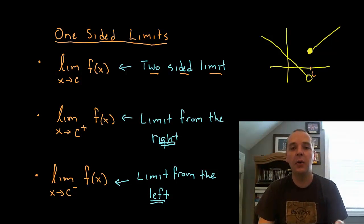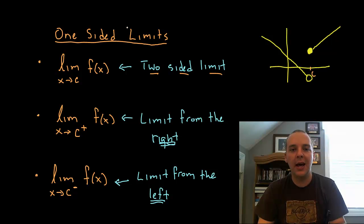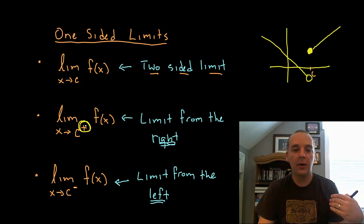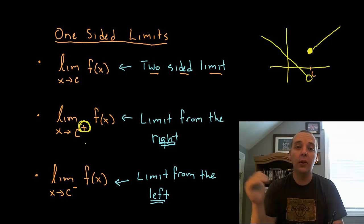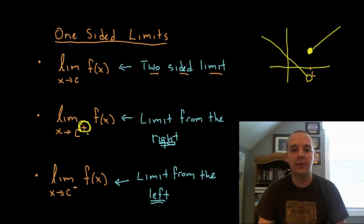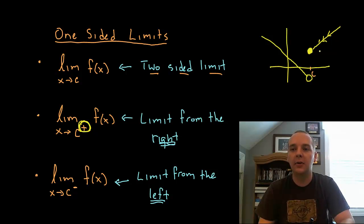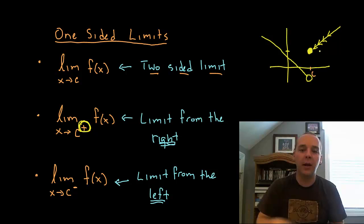But in certain situations we might want to know what the limit is only from one side. Here's the notation for that: if you write the limit as X approaches C but you add a little plus sign in the upper right-hand corner of the constant — basically where an exponent would go, but it's not an exponent, it's just symbolic notation — that's read as the limit as X approaches C only from the right-hand side. So based on my graph, that would be the Y value these arrows are approaching, and whatever that Y value is would be the limit from the right-hand side.